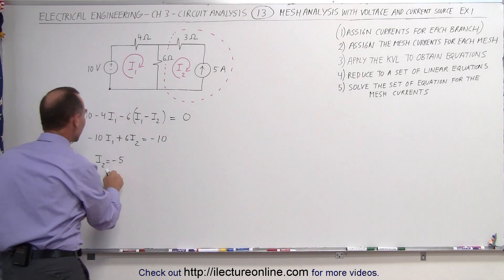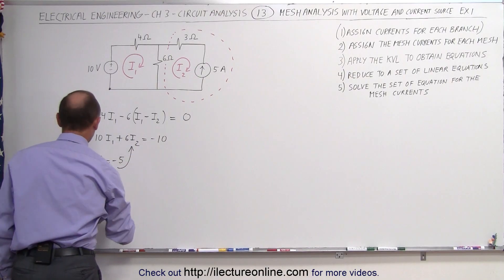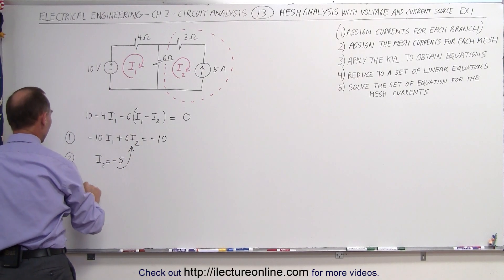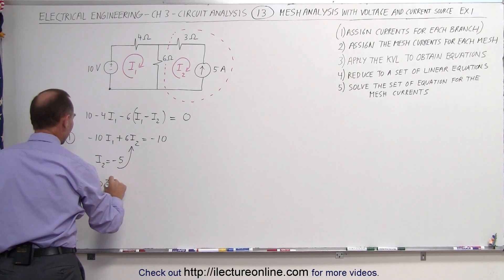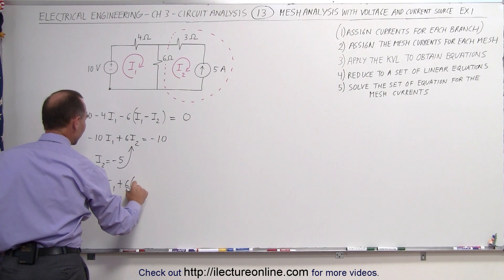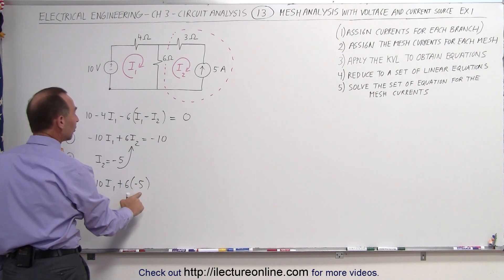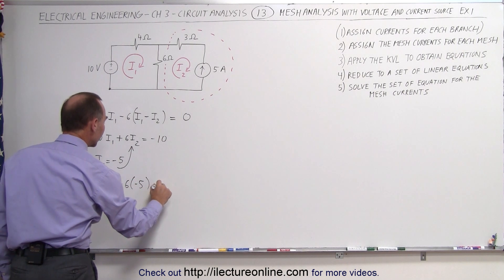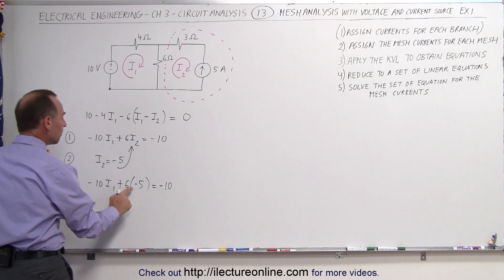If we now use that information and plug that back into our first equation, our first equation now simplifies to minus 10 I1 plus 6 times minus 5, notice that these are in opposite directions, equals minus 10.